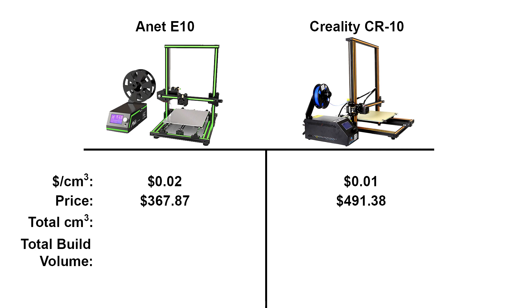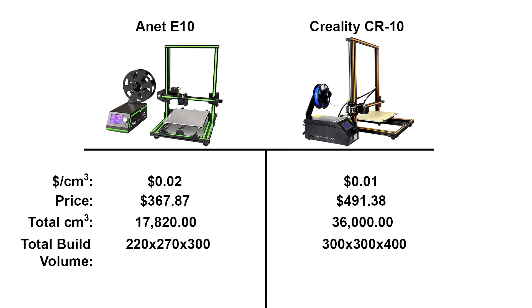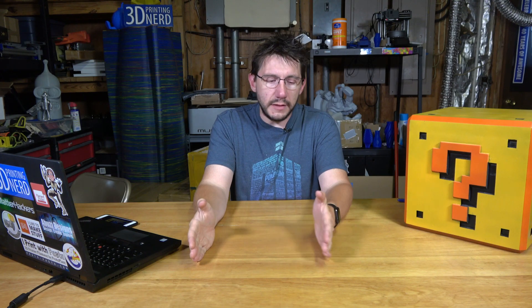The CR10 build volume is two times that of the Anet E10. The penny and two cents per cubic centimeter of build volume is incredibly low — no matter what, we're comparing two very aggressively priced 3D printers. But when you see that the build volume of the CR10 is twice that of the E10 and it's not twice the price, you know that the CR10 versus the E10 is still the much better deal.